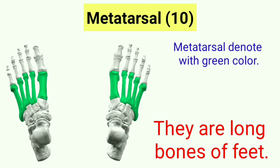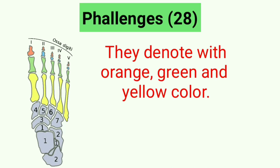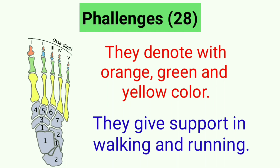Metatarsals — also called inner step bones; these are the long bones of the feet. Phalanges — also called toe bones; their quantity in our body is 28. These bones are supportive in walking and running.